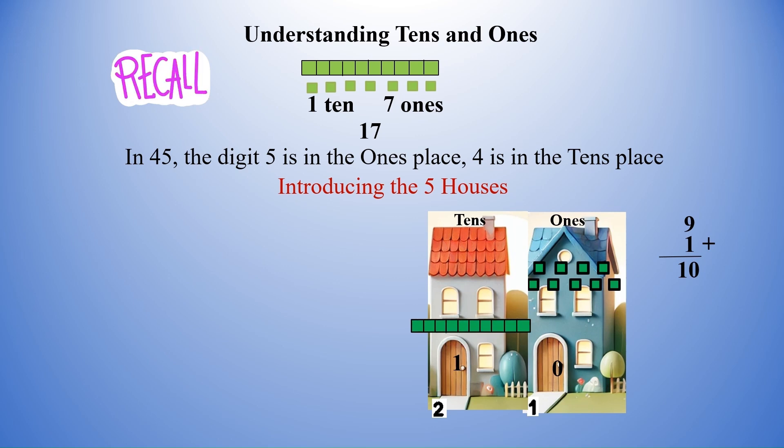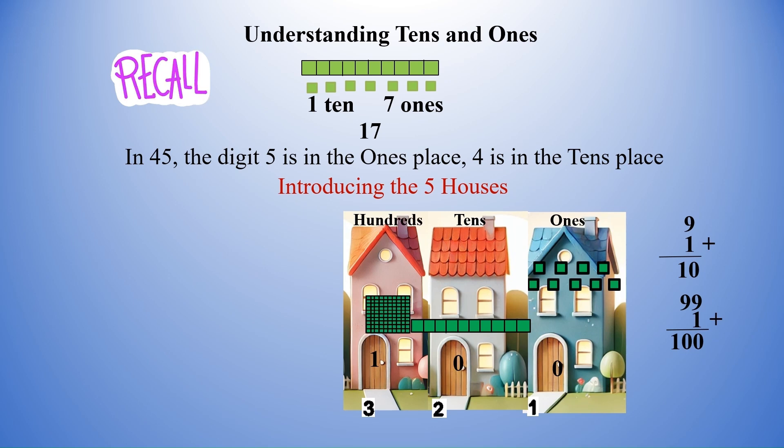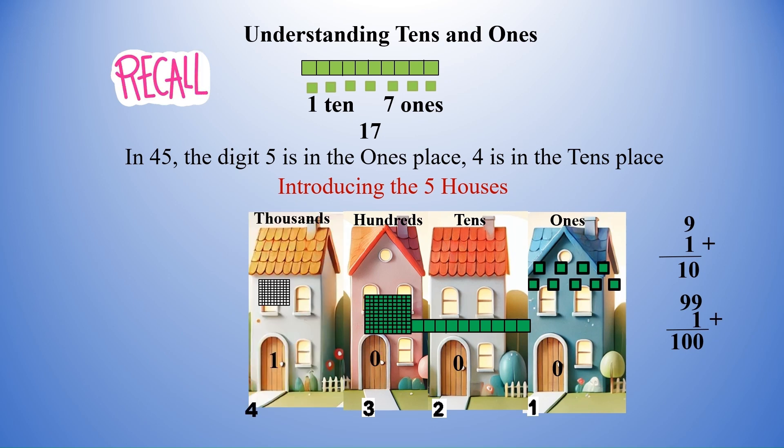When we add 1 to the largest 2-digit number 99, we get 100. So if we move the 1 to house number 3, we now have 1 hundred or 100. Next move 1 to house number 4. We have 10 hundreds which we call 1000. 1, 2, 3, 4, 5, 6, 7, 8, 9, 10. 10 hundreds is 1000.